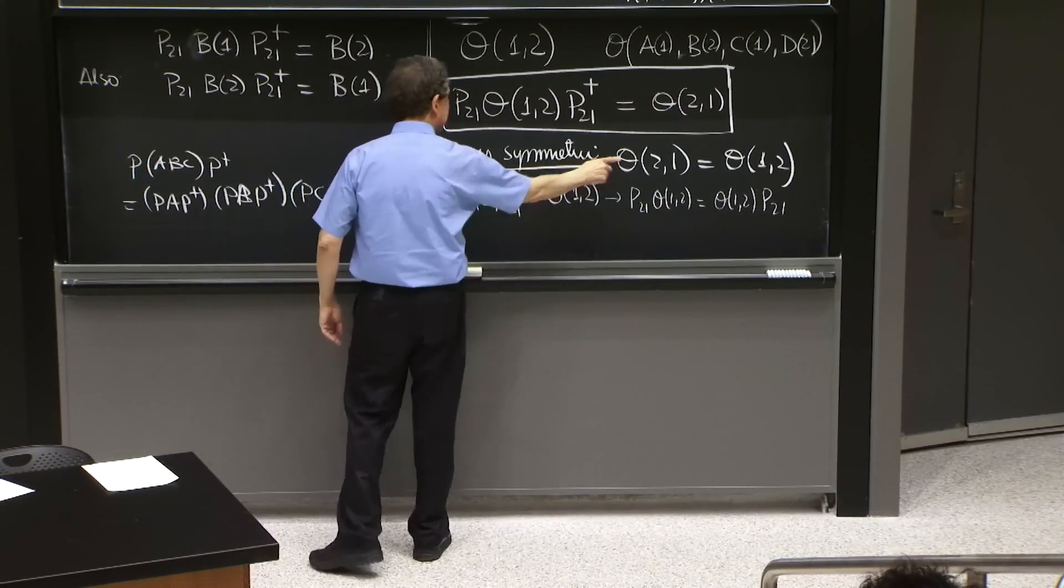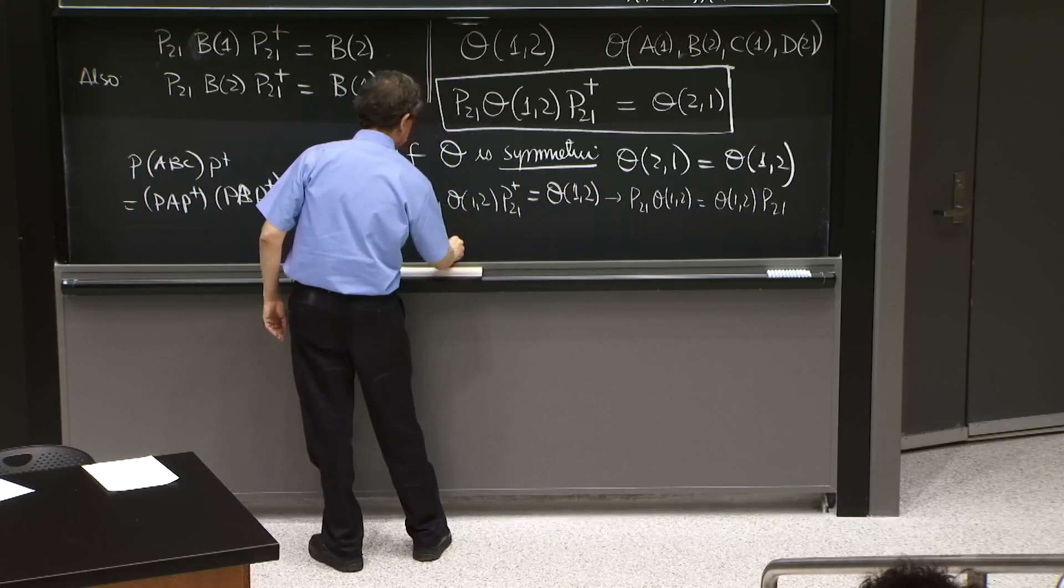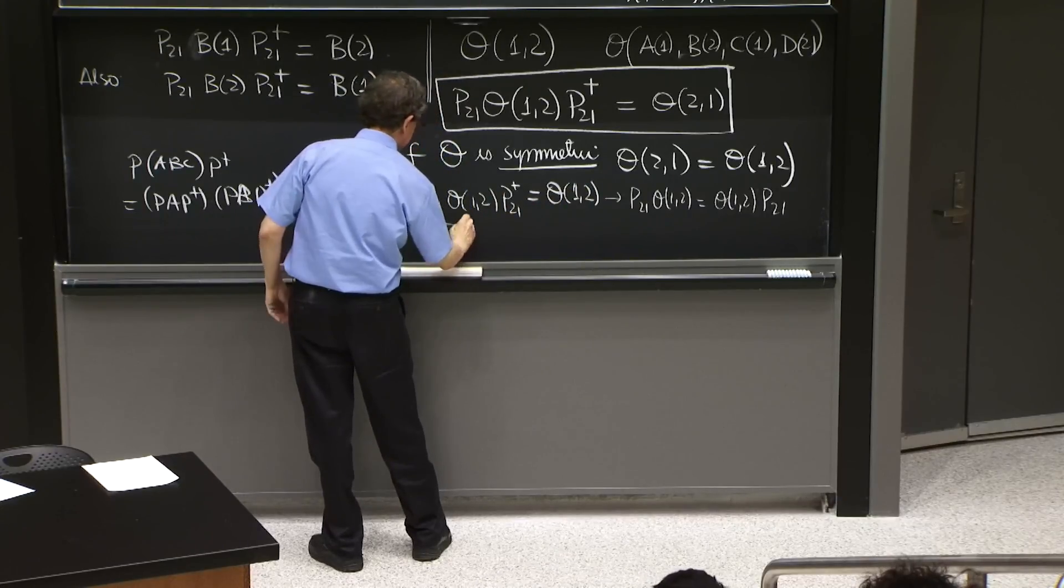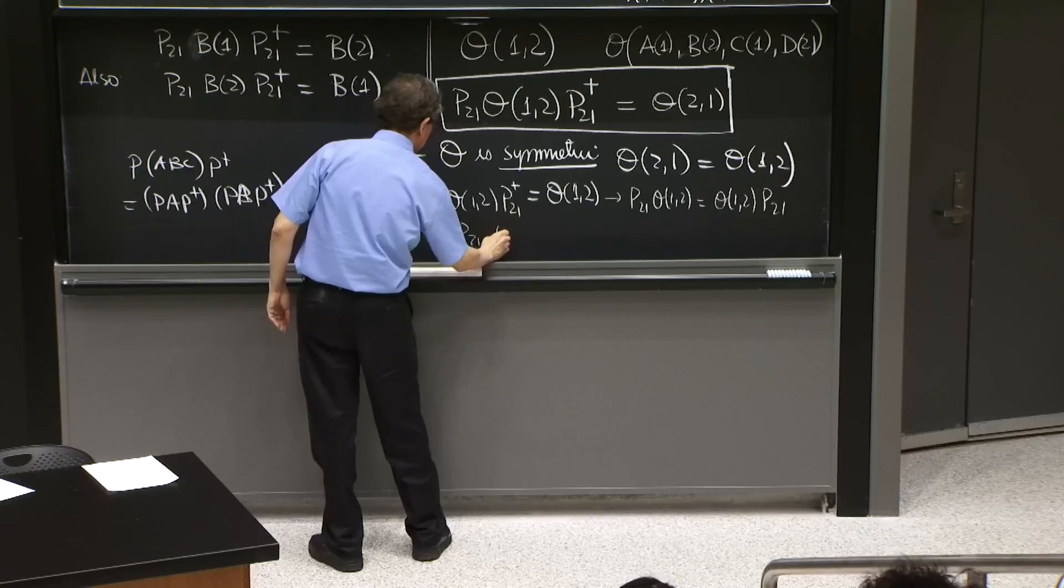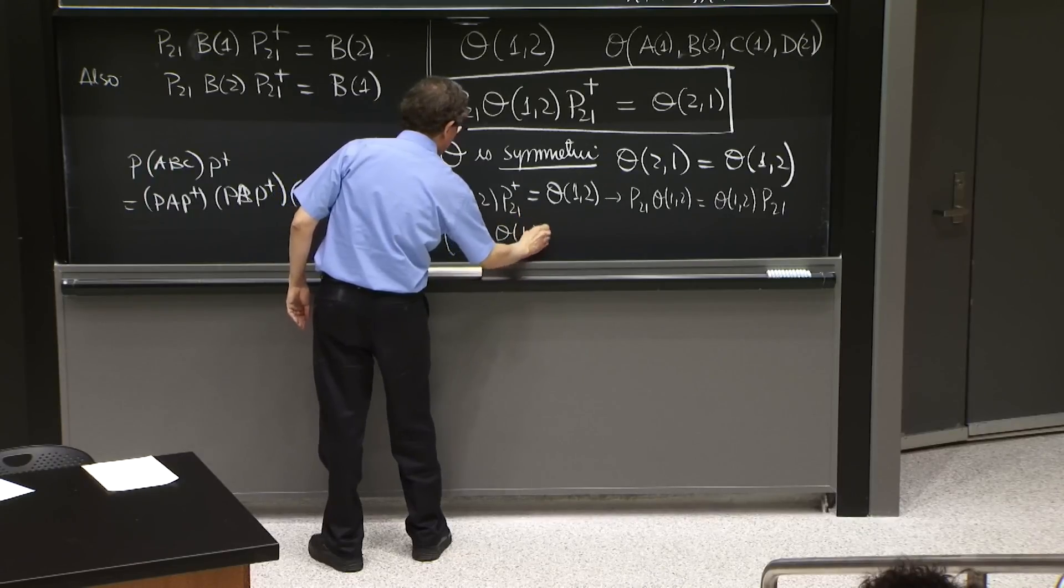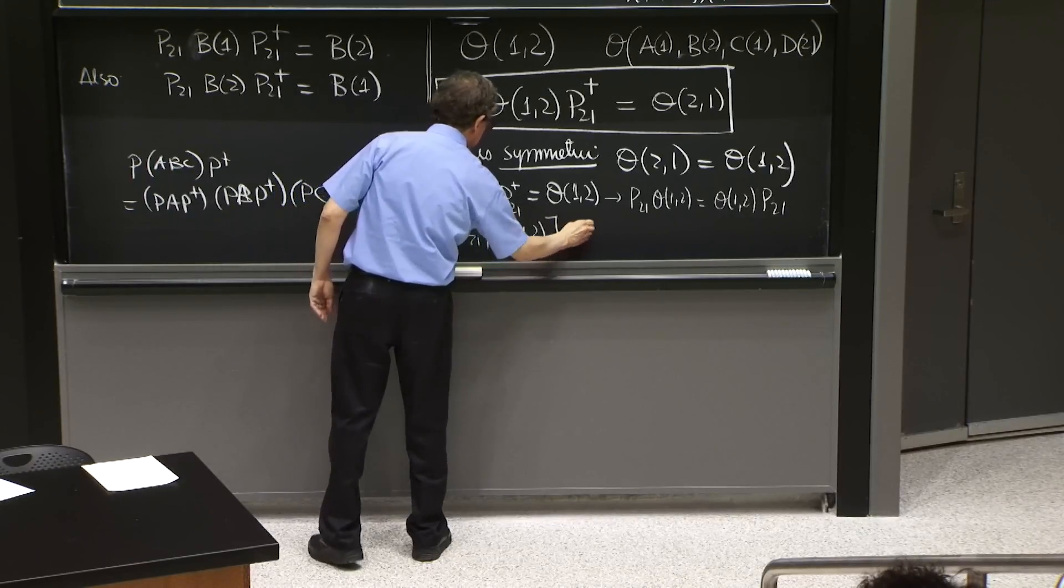So if O is symmetric, this is true, and this is true. And then finally, P21 with O12, commutator is 0.